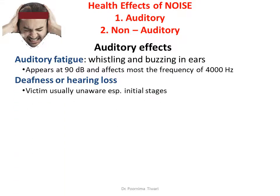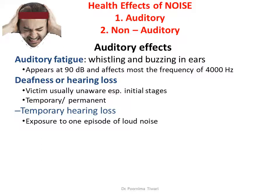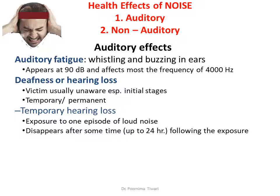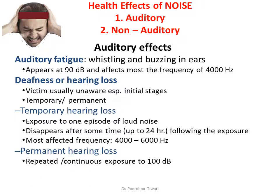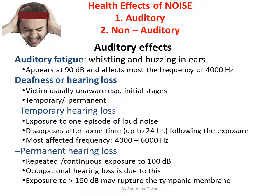Deafness or hearing loss: the victim is usually unaware, especially in the initial stages. Hearing loss may be temporary or permanent. Temporary hearing loss can occur due to a single episode of loud noise exposure and usually disappears within 24 hours; the frequencies most affected are 4,000 to 6,000 Hz. Permanent hearing loss can occur if exposure is repeated or continuous to sounds above 100 decibels. Most occupational hearing loss — in workers at airports, railway stations, and noisy factories — is due to noise-induced permanent hearing loss. Exposure to very loud noise above 160 decibels can even rupture the tympanic membrane.